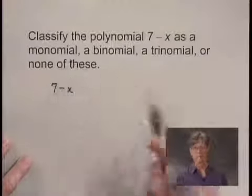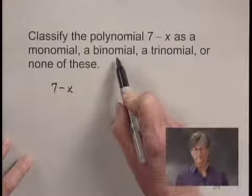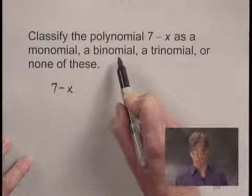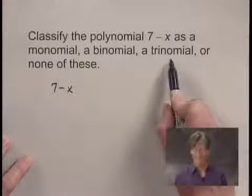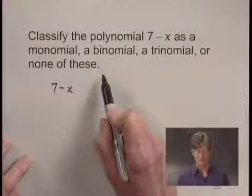A monomial is a polynomial that has exactly one term. A binomial is a polynomial that has exactly two terms. A trinomial has exactly three terms, and if we don't have any of these three situations, then we would say we have none of these.